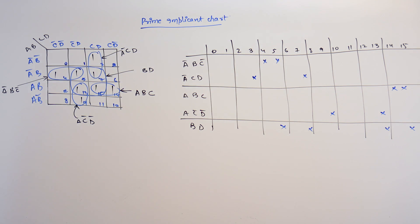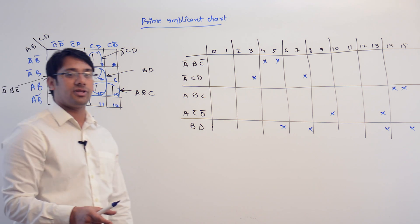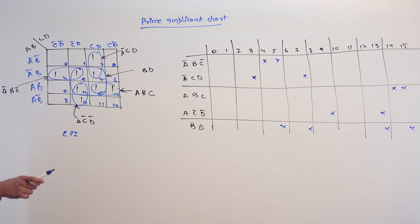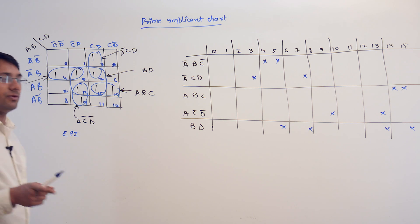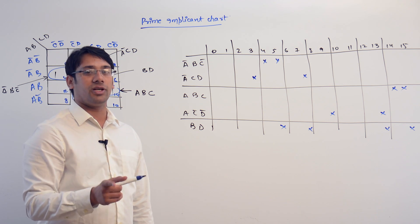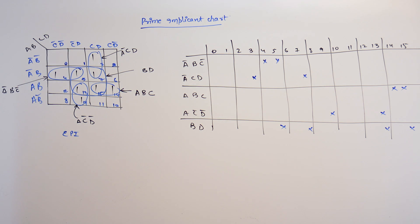So first of all, let us identify what are the essential prime implicants. The essential prime implicants are the implicants which cover a term that is not covered by any other implicant. In a minimized solution equation, all the essential prime implicants should be present. If you miss out any essential prime implicant, then the solution is not representing the equivalent logical function.